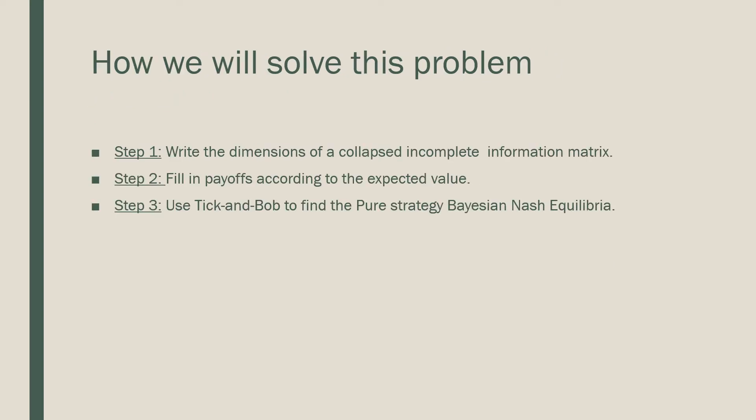The way we're going to solve this problem is by following this procedure. First and foremost, it's really important that you write the dimensions of this game as a collapsed incomplete information matrix, meaning that we're going to write this Bayesian game as one big strategic form game, or what we'd call a normal form game. Step number two is that we're going to fill in the payoffs according to an expected value — in this case, just an average between the two payoffs in each cell, since each game has a 50% chance of being played as given by nature.